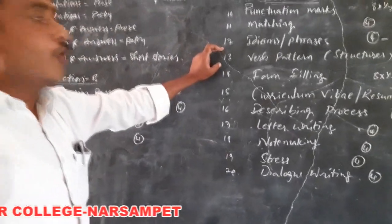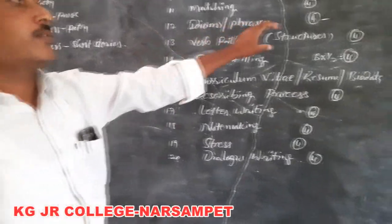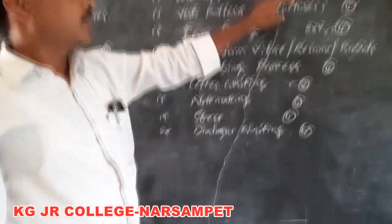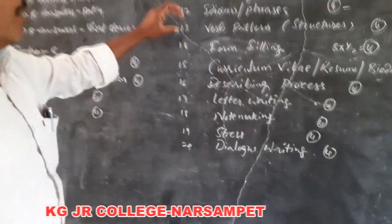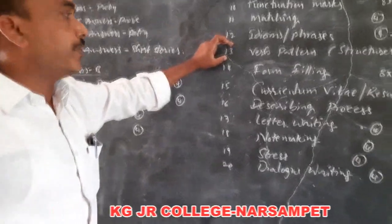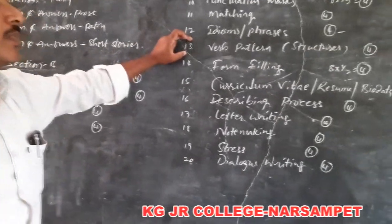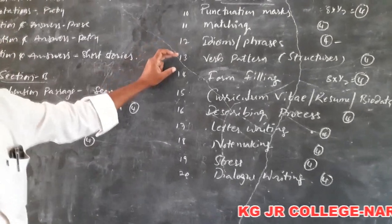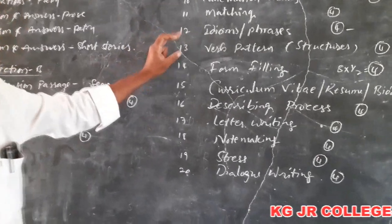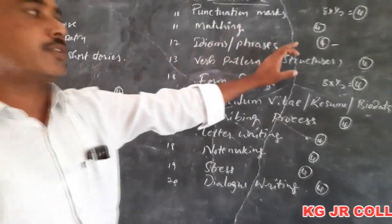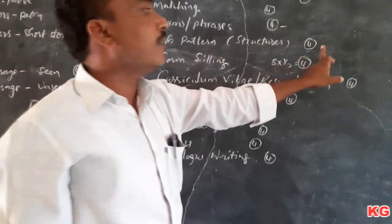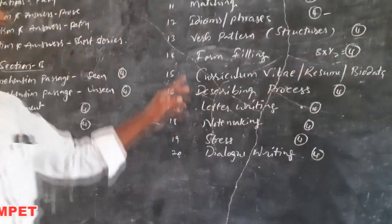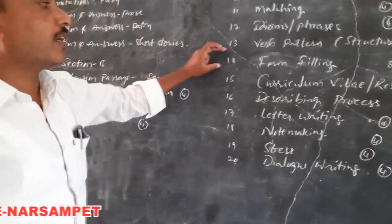The thirteenth bit is word pattern, also known as structures. One example will be given in the question paper and depending on that example, you have to construct four to six verb pattern structures. You can easily get 4 out of 4 marks in this bit.